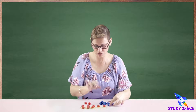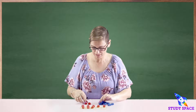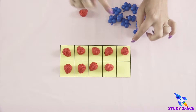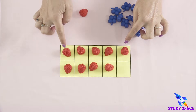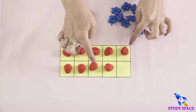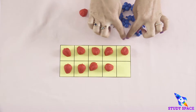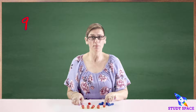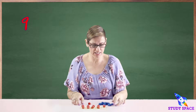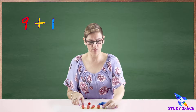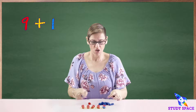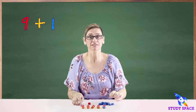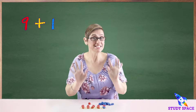Let's do one more. One, two, three, four, five, six, seven, eight, nine — I've got nine strawberry friends. So I'm only going to need one blueberry friend. So nine plus one equals ten.